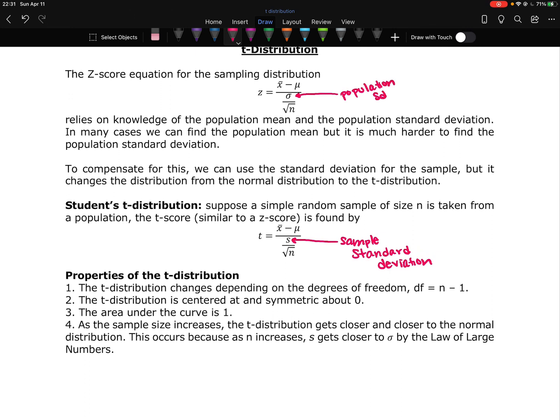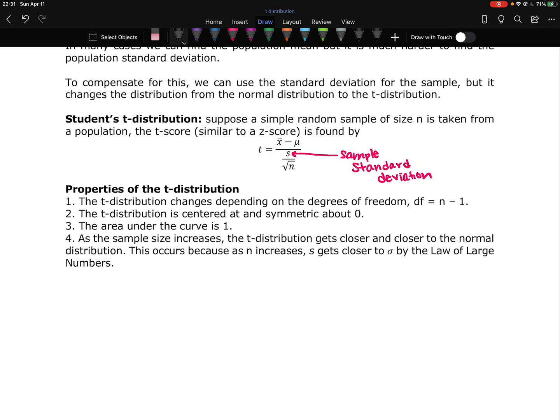And that one little switch changes the distribution from a normal to a t. Otherwise, the distributions are fairly similar. They are both bell curves. So a normal distribution we've seen over and over again, it's a bell curve. The t-distribution is also a bell curve.